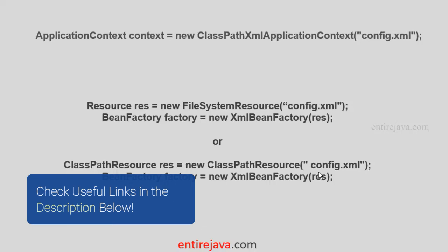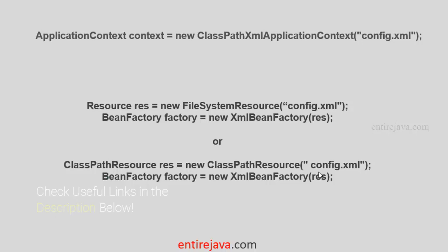Don't worry about all these terms — we're going to explore all of them in coming chapters. But clearly, Application Context is a much better option compared to Bean Factory, as it supports a lot of features which Bean Factory doesn't. However, there could be some cases where Bean Factory might be a better option. For example, if you're developing an application for a mobile device and you realize you don't need all the features of Application Context, then you can use Bean Factory, because it will offer better performance at the cost of features.